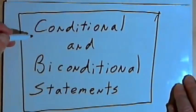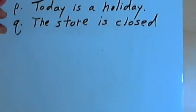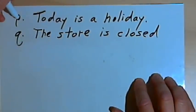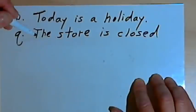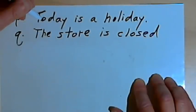This video is going to be about conditional and biconditional statements. Here's an example with a conditional statement. We start out with two statements: statement P, 'today is a holiday,' and statement Q, 'the store is closed.' Now I can put these two statements together into one statement — a conditional statement, sometimes called an if statement.